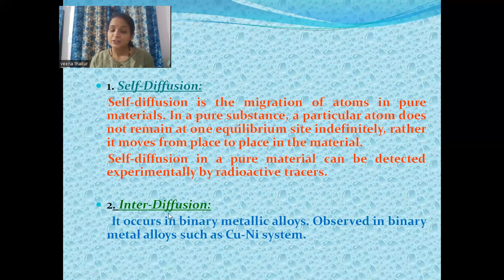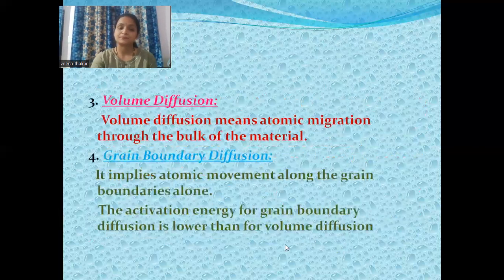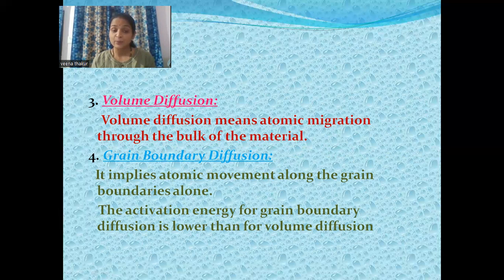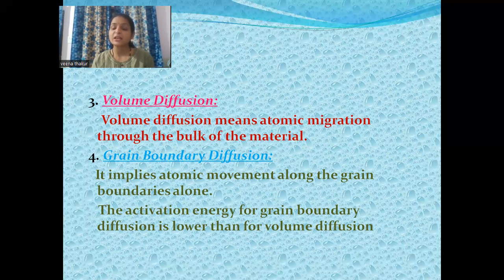Interdiffusion, the second type, occurs in binary metallic alloys, such as the copper-nickel system. Volume diffusion, the third type, means atomic migration through the bulk of the material. Grain boundary diffusion, the fourth type, involves atomic movement along the grain boundaries. The activation energy for grain boundary diffusion is lower than for volume diffusion.